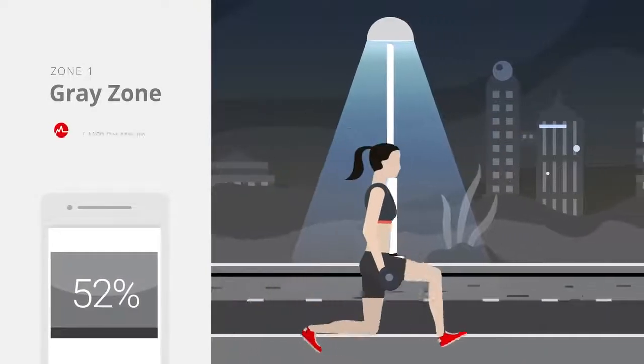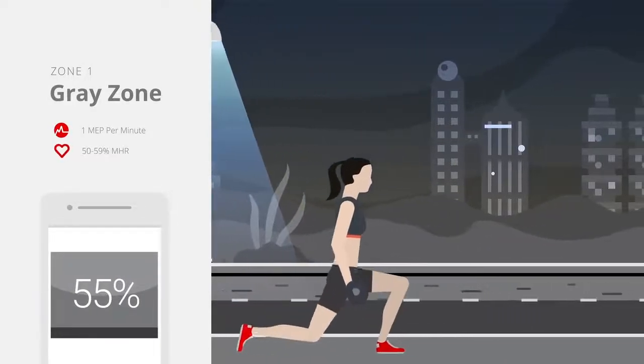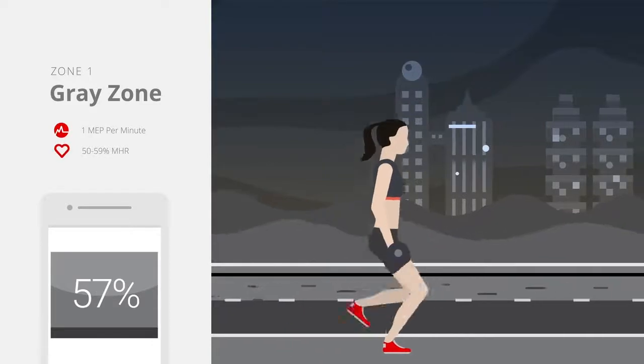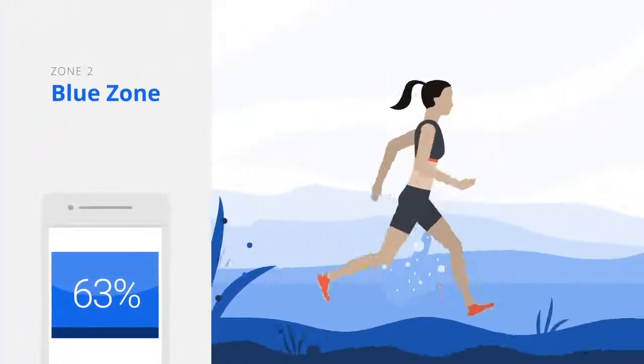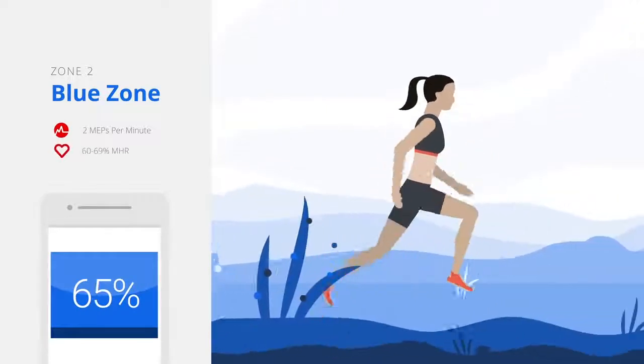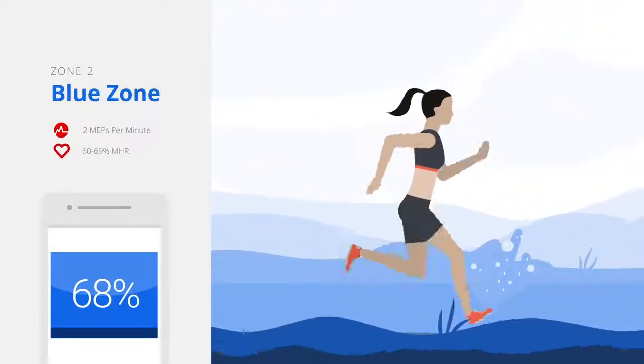When your effort is 50 to 59 percent of your MHR, you're in the gray zone, great for warm-ups and cooldowns. You can start and end your workouts here. 60 to 69 percent, the blue zone, is ideal for building a fitness base, cooling down, recovery workouts, or long duration exercise.